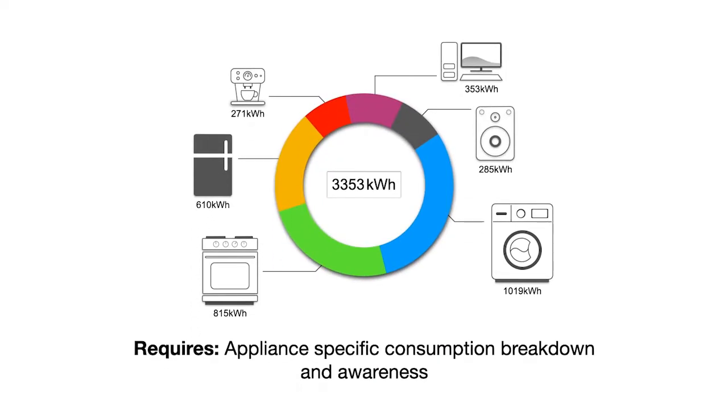We could also make it a game, for example, challenge our neighbors on who reduces less energy in the next week. But all that requires, or at least benefits from knowing the exact consumption of each appliance in our home. This is called appliance level consumption feedback.